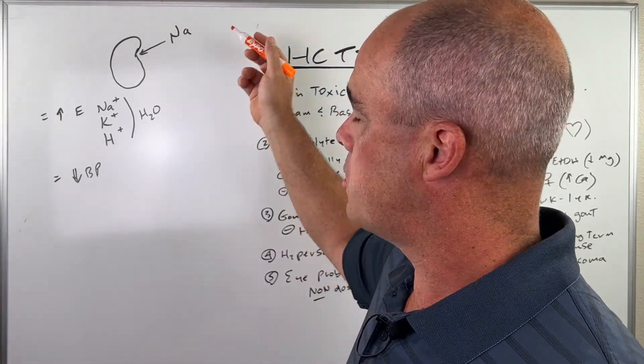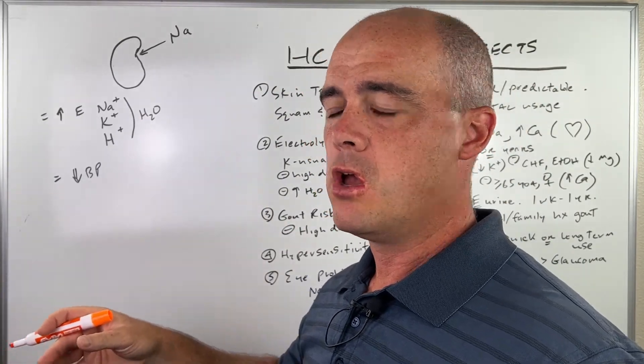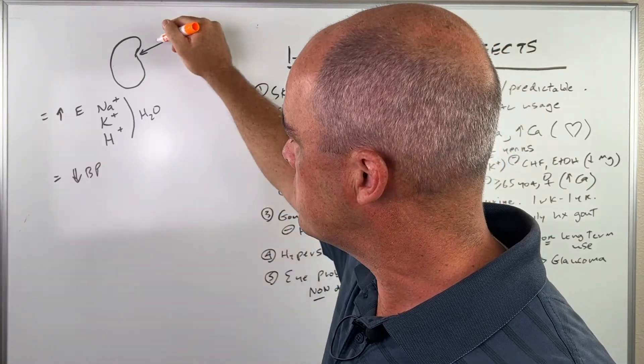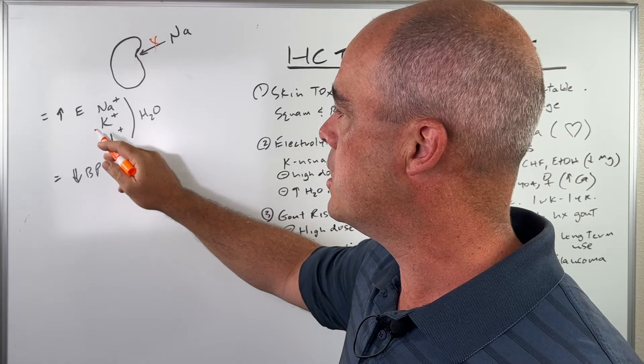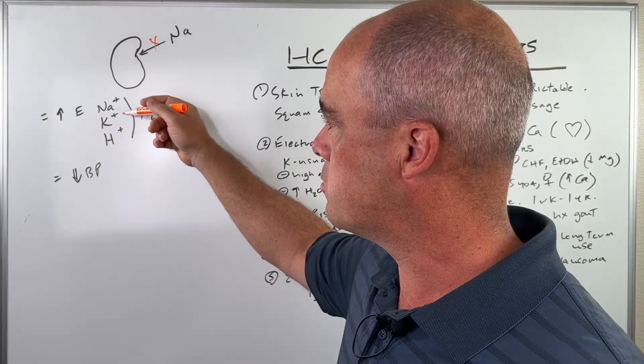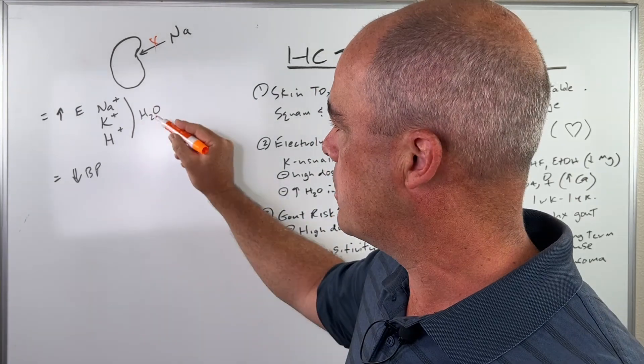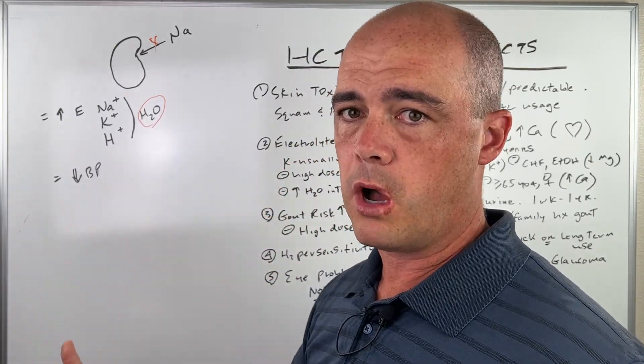So hydrochlorothiazide or HCTZ is an old school diuretic. You get rid of water and they use it primarily to treat blood pressure. Now, as I do in a lot of these side effect videos, I like you to know what the drug does in your body. It's going to make more sense to understand the side effects. So sodium is normally reabsorbed by your kidneys. What hydrochlorothiazide does, HCTZ, is it blocks this reabsorption of sodium by your kidney. And what that leads to is your body's going to get rid of more sodium. It gets rid of more potassium. It gets rid of more hydrogen. And the end result is you have a diuretic that you're going to pee out more water.